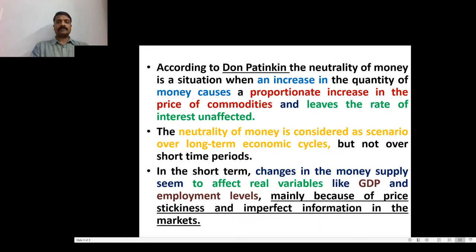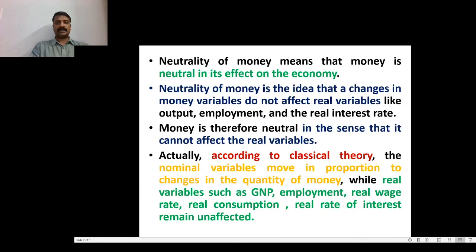Don Patinkin says neutrality of money is a situation when an increase in the quantity of money causes a proportionate increase in the prices of commodities and leaves the rate of interest unaffected. The rate of interest is a real variable.